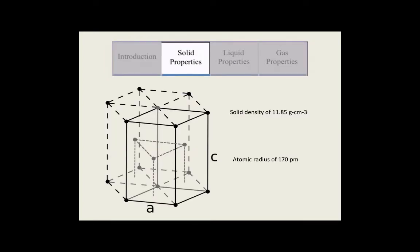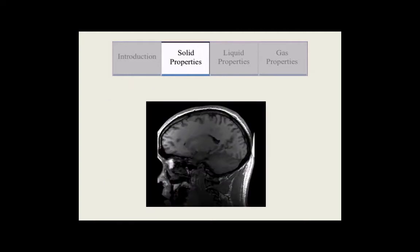Thallium in its solid form is malleable, and its crystal structure is hexagonal close-packed. It has a solid density of 11.85 grams per cubic centimeter, and an atomic radius of 170 picometers.